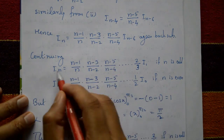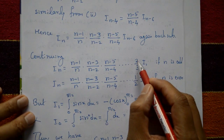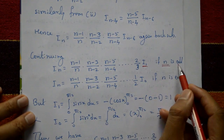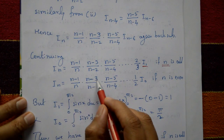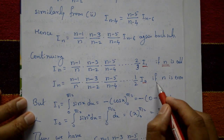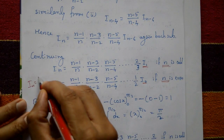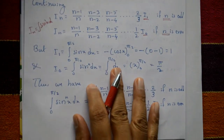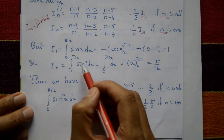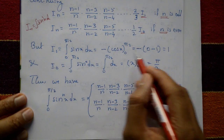Continuing this process: Iₙ = (n−1)/n · (n−3)/(n−2) · (n−5)/(n−4) · … · 2/3 · I₁ if n is odd, or … · 1/2 · I₀ if n is even. To evaluate, we find I₁: I₁ = ∫₀^(π/2) sinx dx = [−cosx]₀^(π/2) = −cos(π/2) + cos(0) = 0 + 1 = 1.